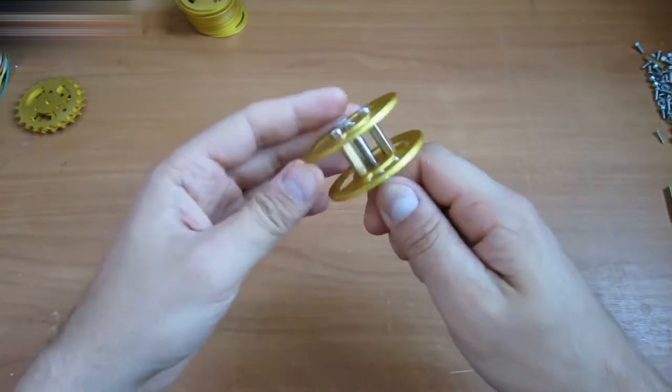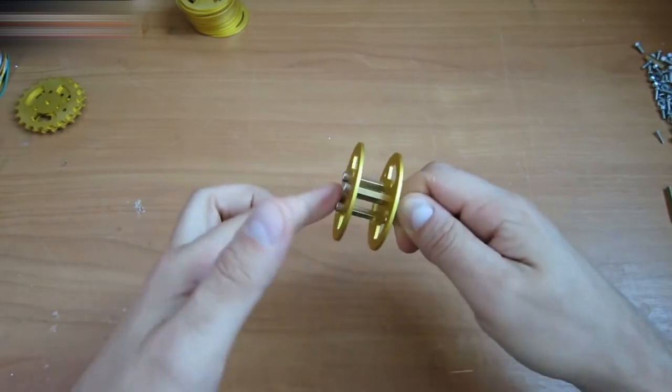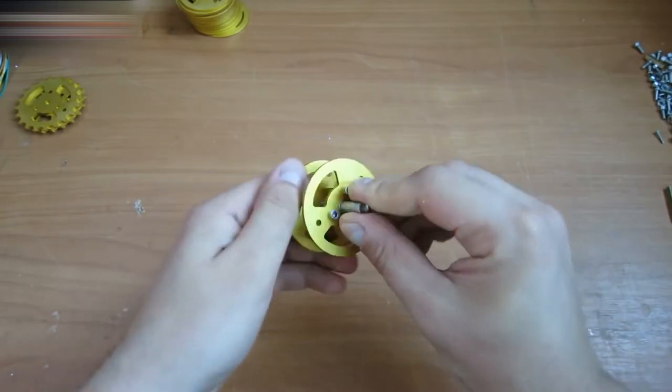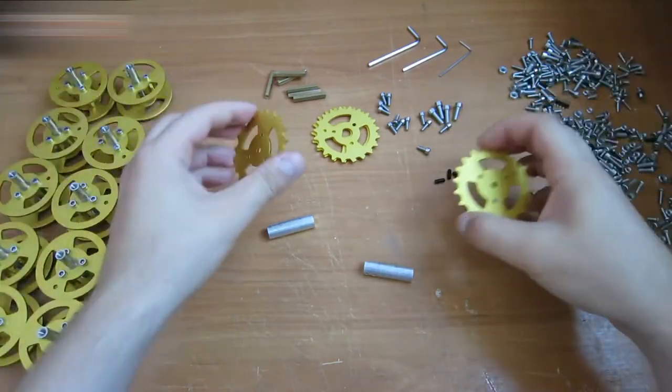This is what it's supposed to look like. It rotates well because of the bearings. We will need ten of these. When these wheels do the same, you will have two identical pieces.